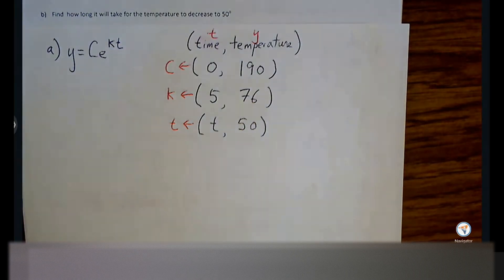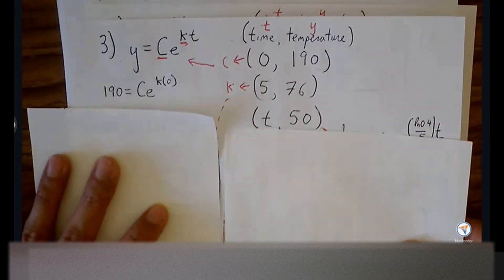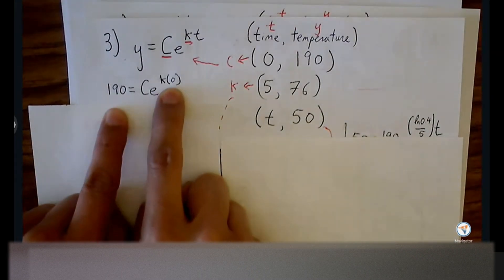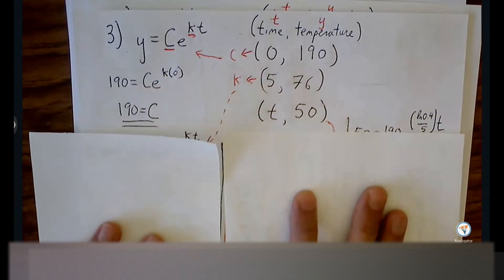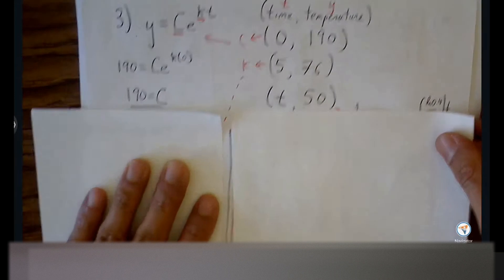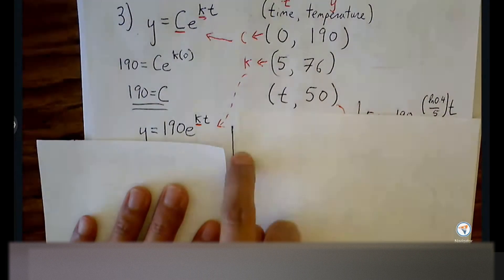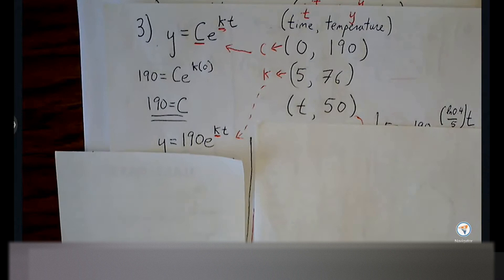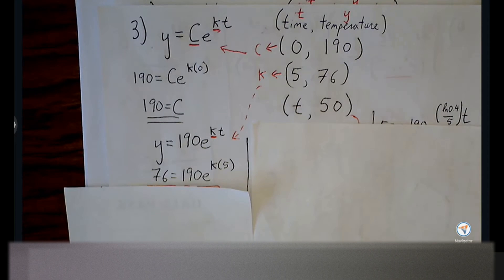Let's see how far we got. First, involve the ordered pair (0, 190): plug 0 in for T and 190 for Y. Just as we suspected, the 0 is helpful — it wipes out that K for us and we can solve for C first. C is 190. Update the equation. Once we've updated the equation with the C value, we can make progress. Take the second ordered pair (5, 76) to help us solve for K — 5 goes in for T, 76 goes in for Y.